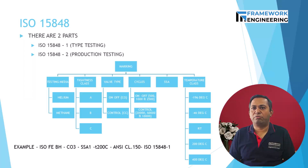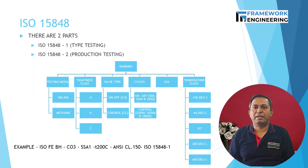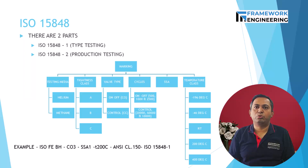If it is an on-off valve, the number of cycles are 500, 1000, and 2500. If it is a control valve, then the number of cycles are 20,000, 60,000, and 100,000. Next is SSA — that is stem seal adjustment — and then the temperature class, indicating up to which temperature you need to qualify.